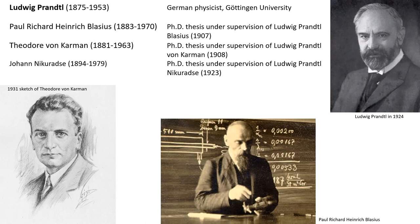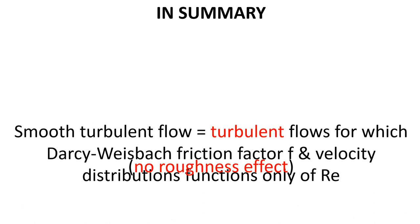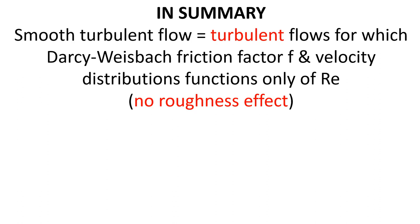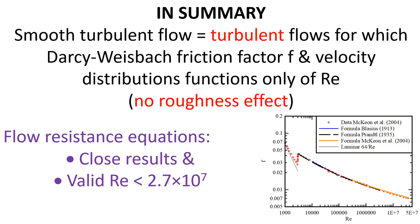In summary, smooth turbulent flow are basically turbulent flows for which the Darcy-Weisbach friction factor and the velocity distributions are functions only of the Reynolds number with no roughness effect. Three flow resistance equations are discussed showing close results, valid with Reynolds number up to 2.7×10^7.